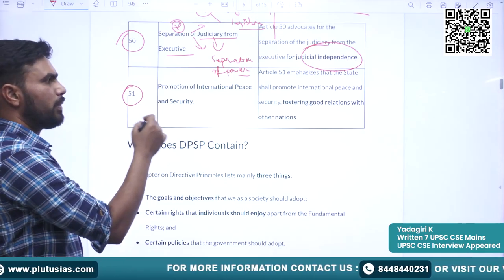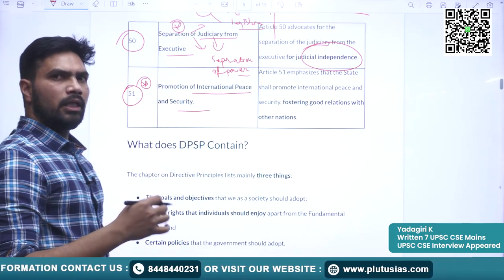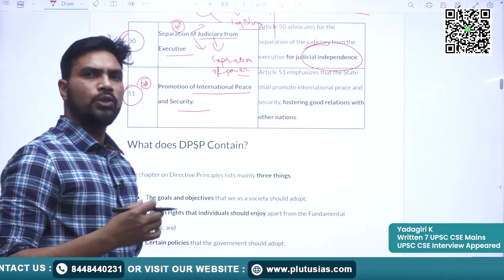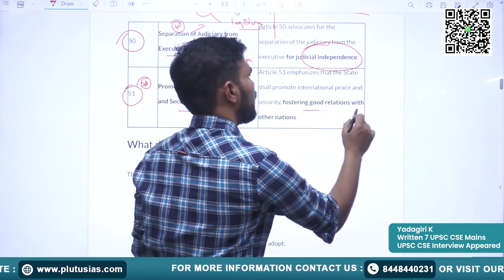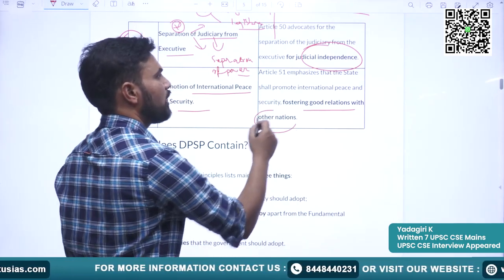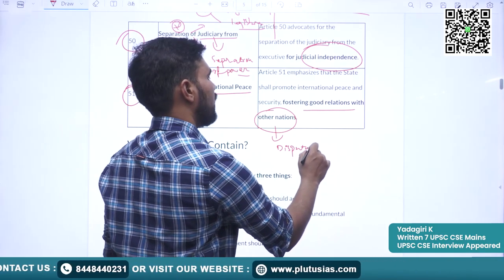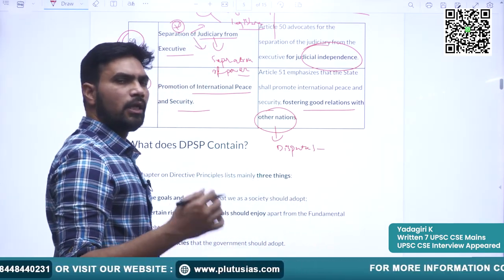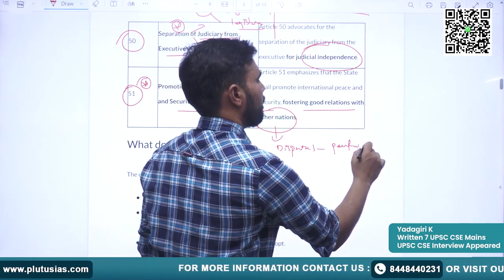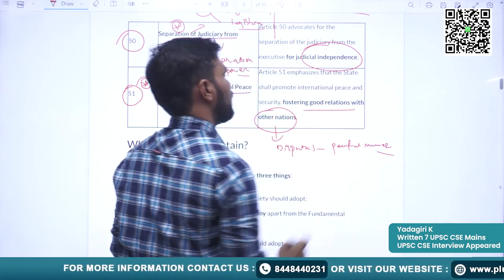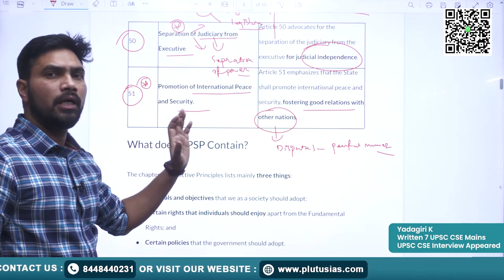The last article in DPSP is Article 51 — promotion of international peace and security. The article asks the government to ensure peaceful coexistence with neighbors and other countries. It also says disputes, if any, shall be settled in a peaceful manner. This is the broad and brief survey of all the directive principles mentioned in Part 4.